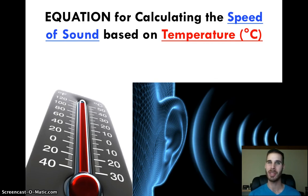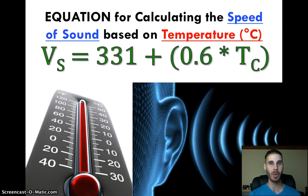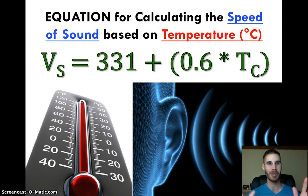Okay, so how are we actually going to use this information? Well there's a very handy equation. Don't worry, it looks scary at first. It's easy to use. The equation states velocity of sound, Vs, equals 331 plus 0.6 times the temperature in Celsius.